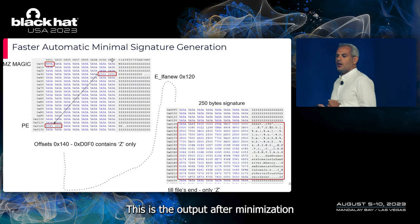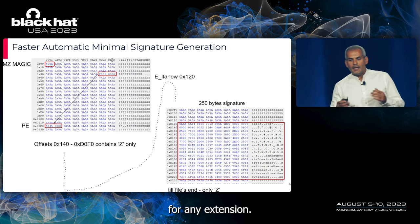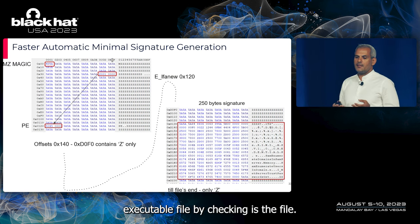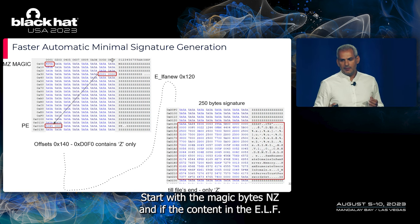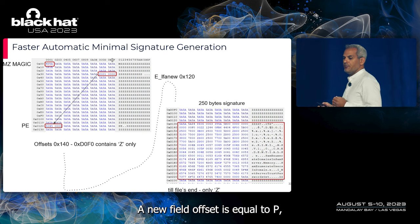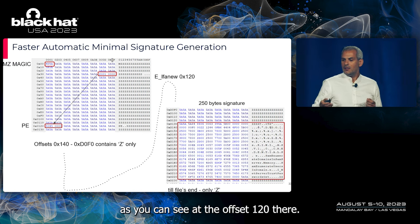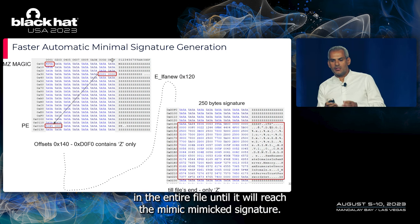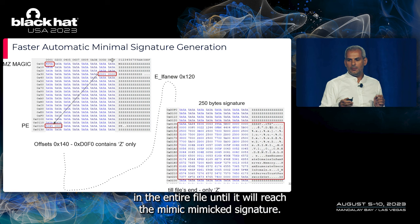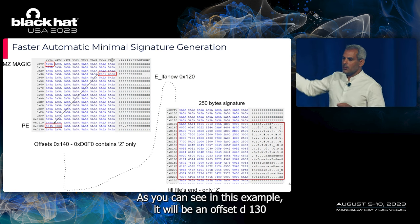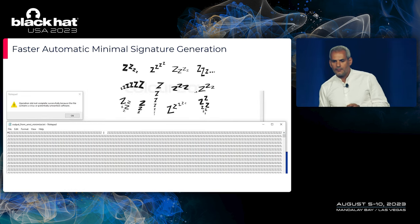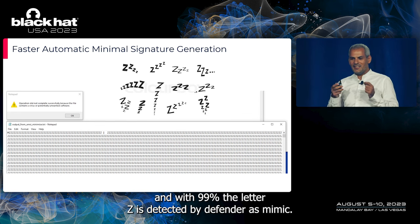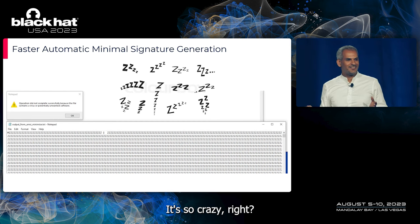After minimization, for any extension Windows Defender checks if the file is a portable executable by verifying the magic bytes 'MZ' and whether the content at the e_lfanew field offset equals 'PE'. If it is a PE file, it scans for signatures across the entire file until it reaches Mimikatz's signature at offset D130. Remarkably, a file with a textual extension where 99% of the bytes are the letter 'Z' is still detected by Defender as Mimikatz.